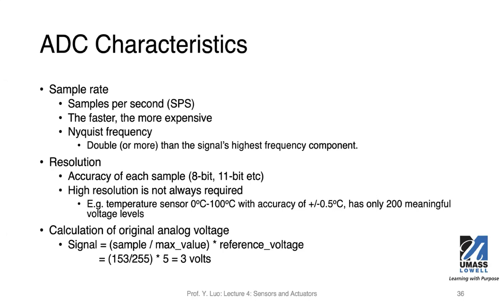There are several important characteristics about ADC. Sampling rate is the most important one. It's about the speed of the conversion, or the samples that the ADC chip can convert per second. The faster the ADC, the faster the sampling rate, and the more expensive the ADC is typically.